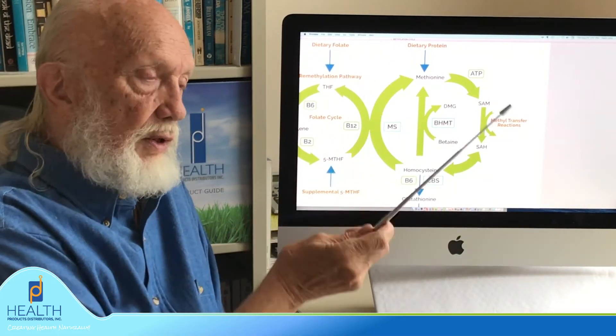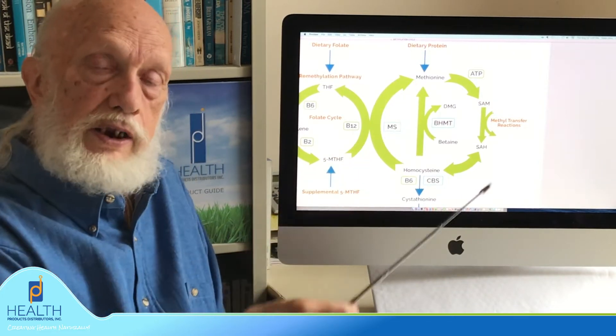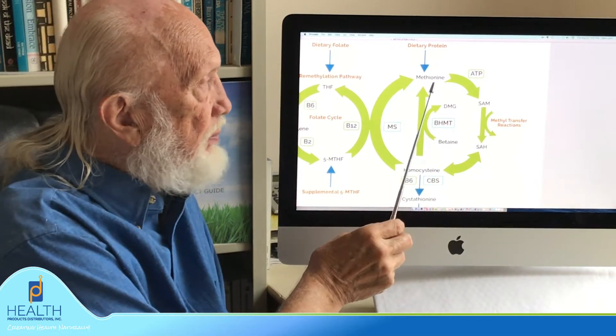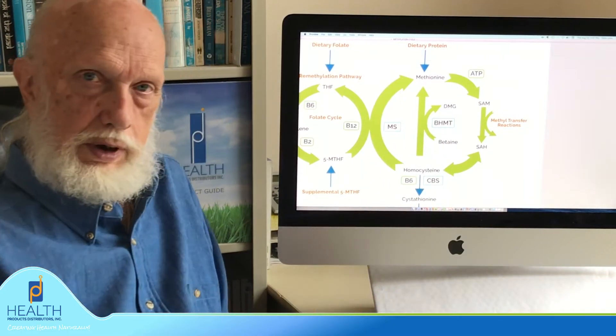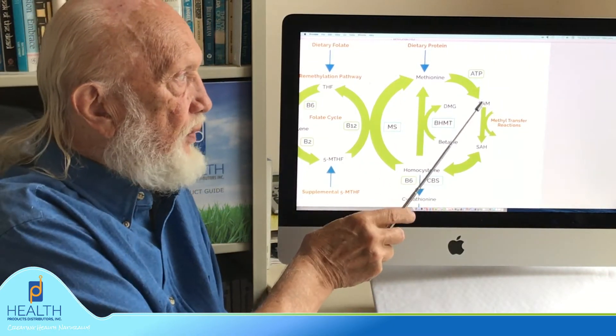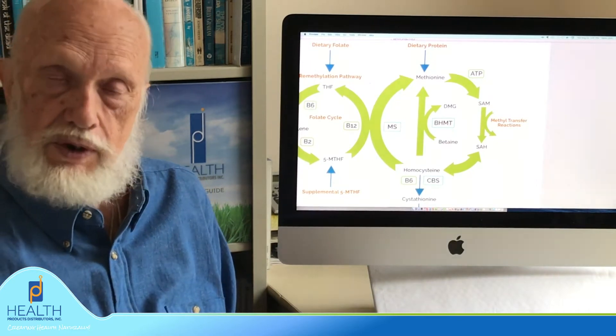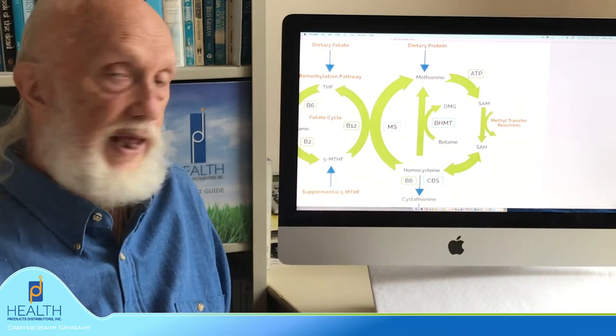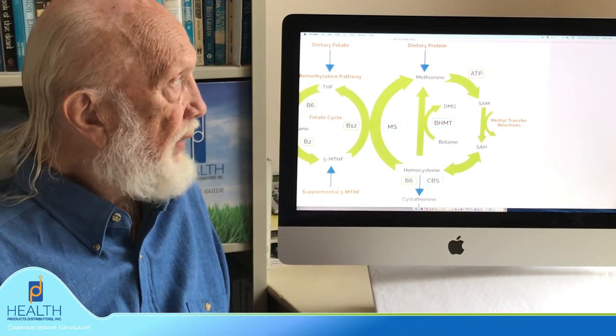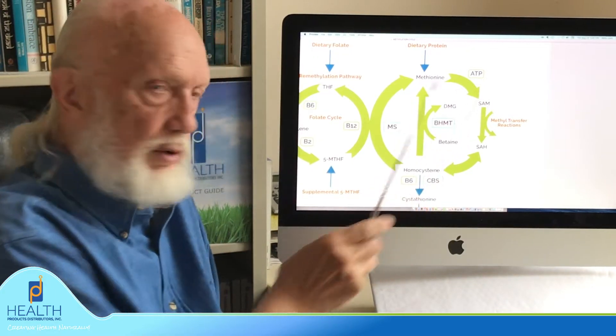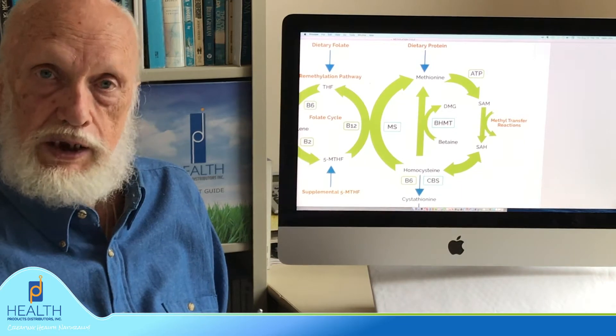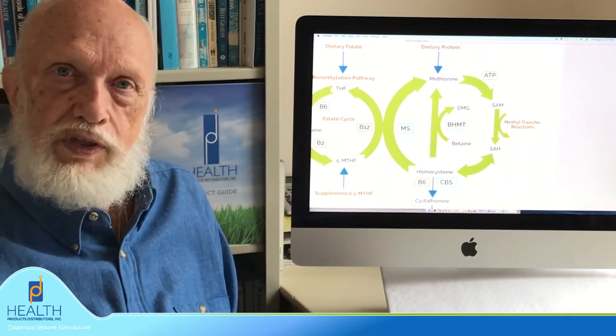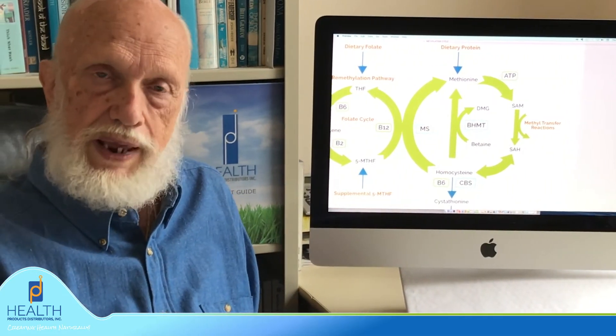Once you have methionine in the body, it goes through a reaction to produce something called SAM or SAMe, which is S-adenosylmethionine. In order for that to take place, like every reaction in the human body, it needs an enzyme and it needs cofactors or minerals or other things that are needed in order to make that reaction work.